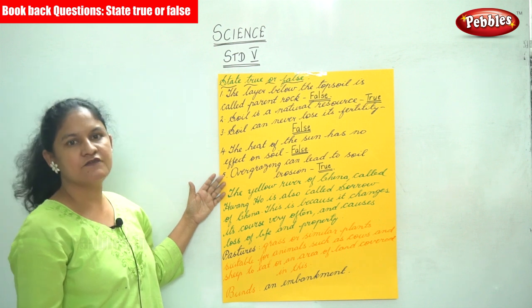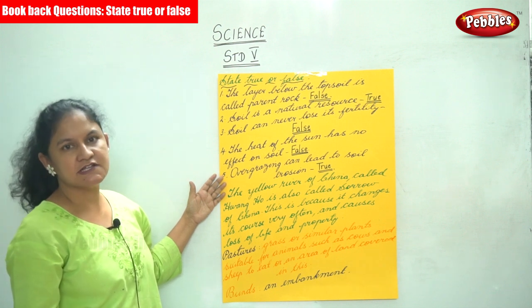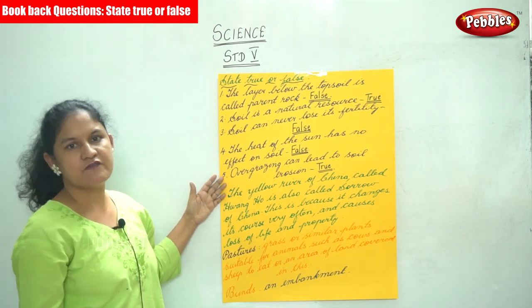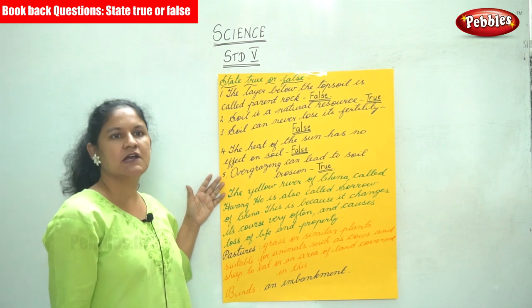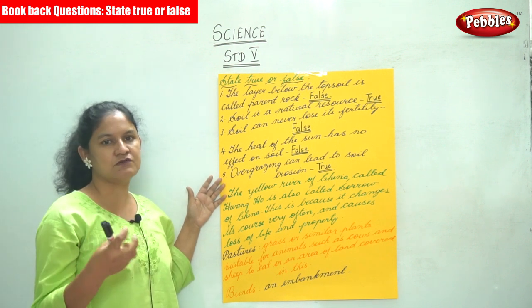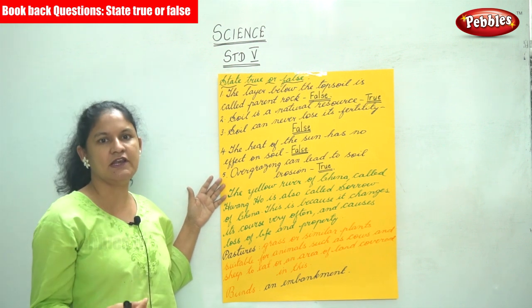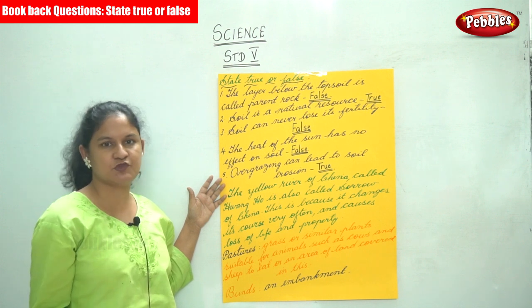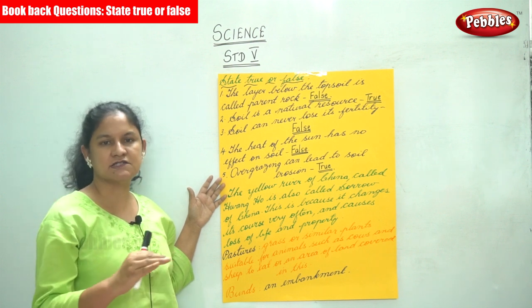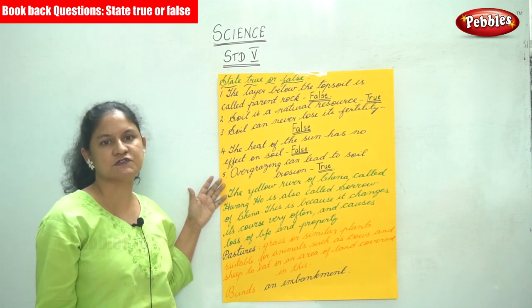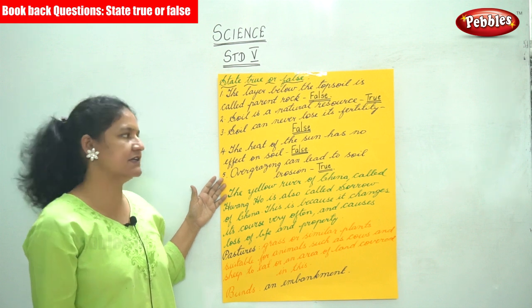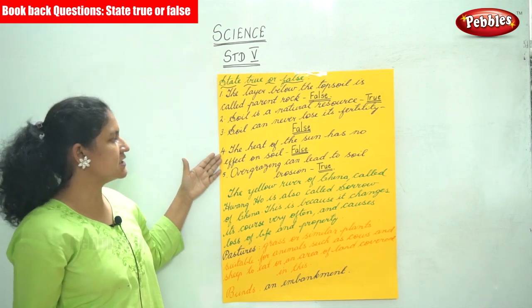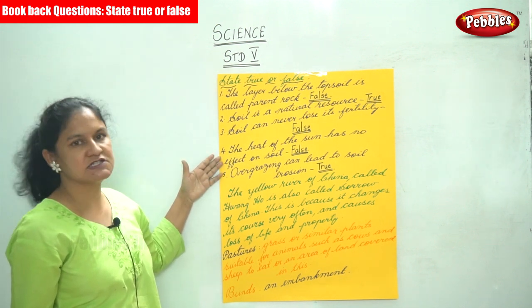Soil can never lose its fertility — false. In the case of heavy rains, the minerals found in the soil dissolve in water and seep through, and hence the top layer of soil loses its fertility.